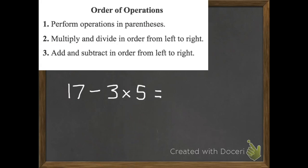Here's a new problem: 17 subtract three times five. First we look for any parentheses, which we don't have this time. So we're done with step one. That was easy.